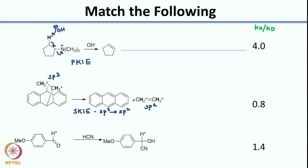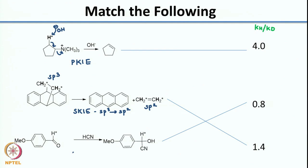Now you know that the last answer is 0.8. Here again the CH bond is not broken in the reaction, so it is a secondary kinetic isotope effect. The hybridization change is sp2 going to sp3, which is why you have an inverse effect. This summarizes whatever we had seen so far for primary and secondary kinetic isotope effects.